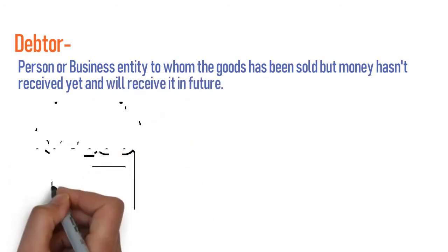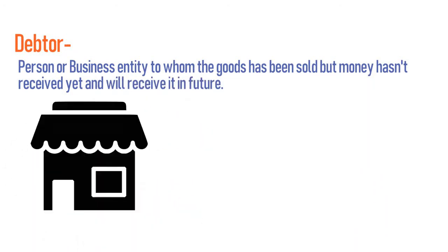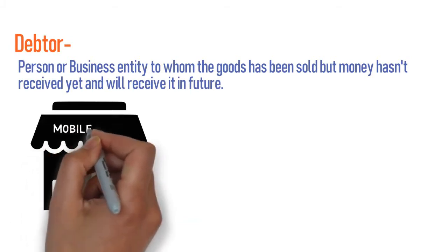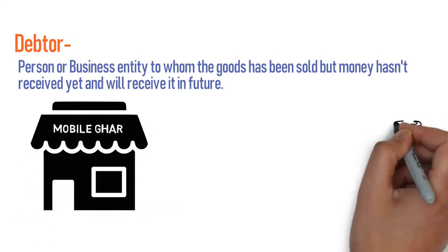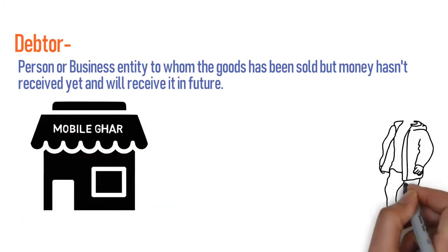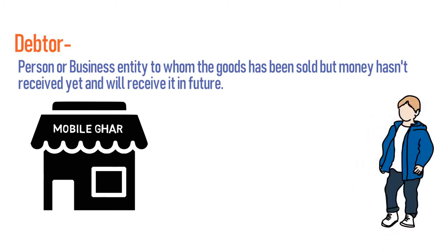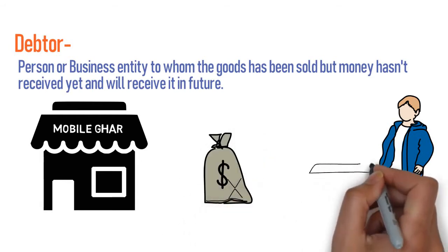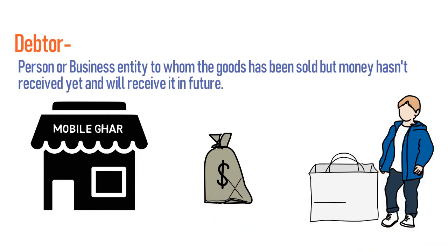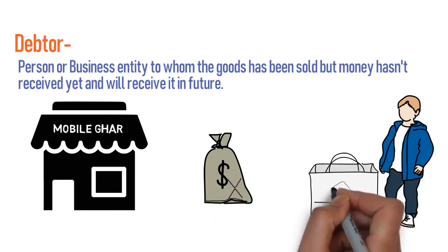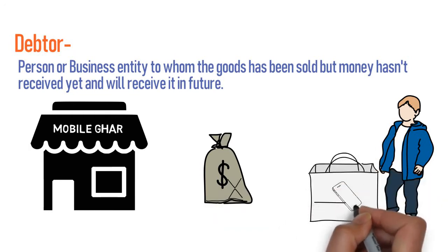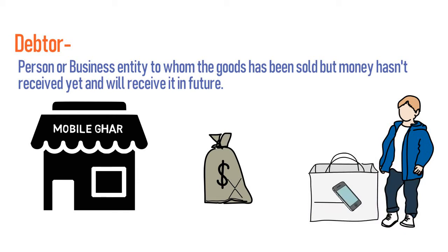Let's take an example. Assume that you have a shop named Mobile Girl, and your friend Arav visits your shop to purchase a mobile. He says, 'Give me one mobile, I'll pay you once my salary is credited to my account.' You agreed and gave him the mobile, since he'll give the money in future.